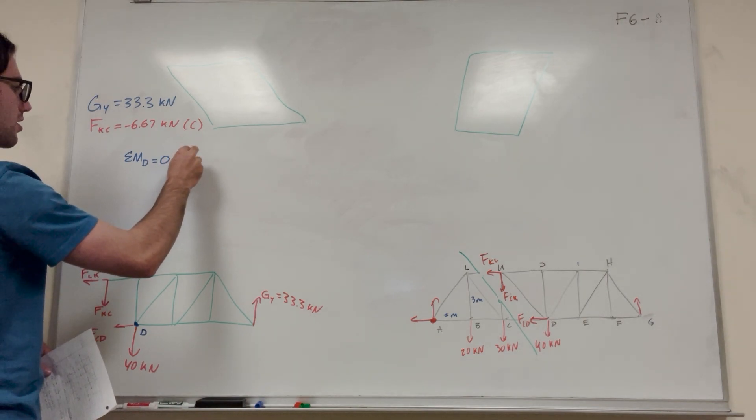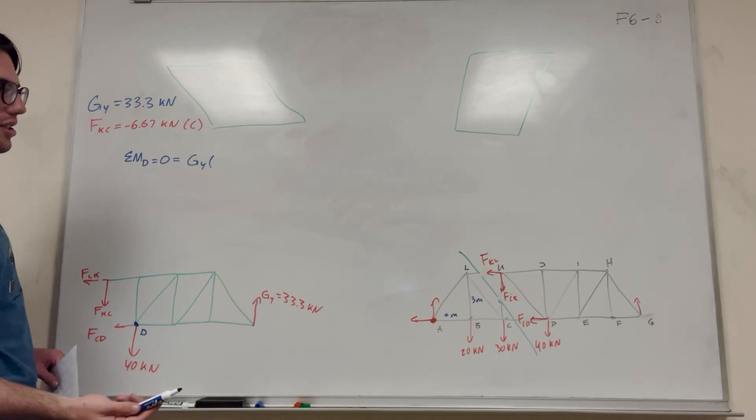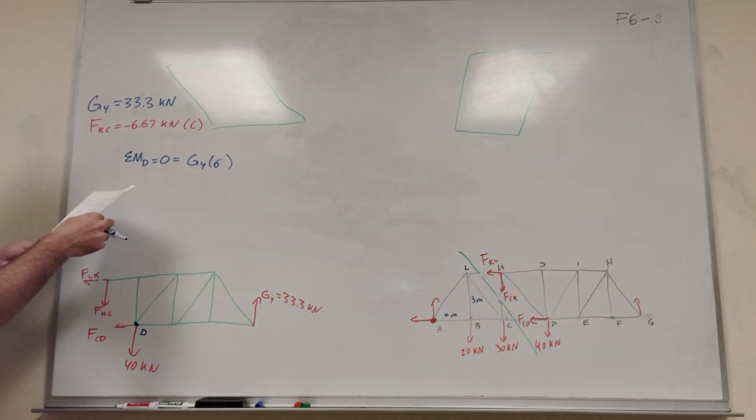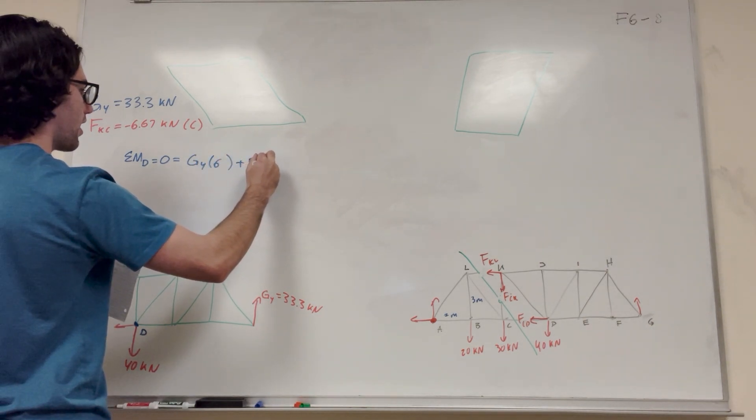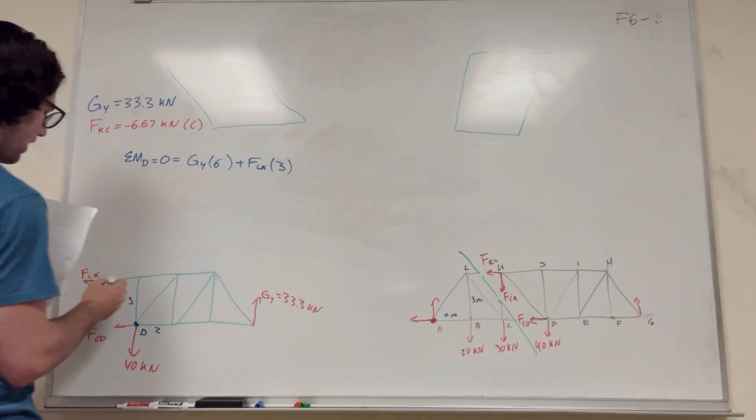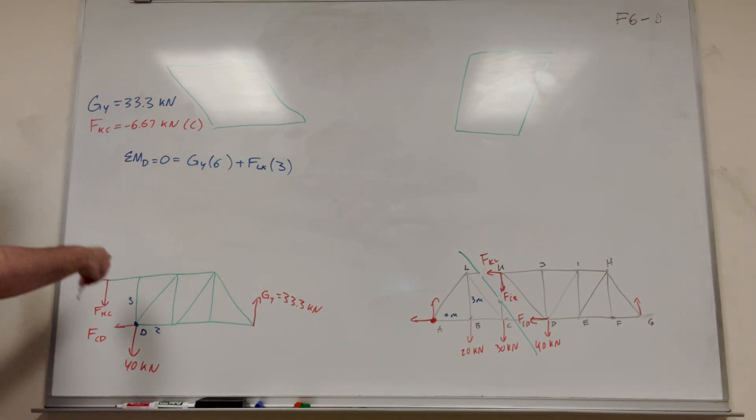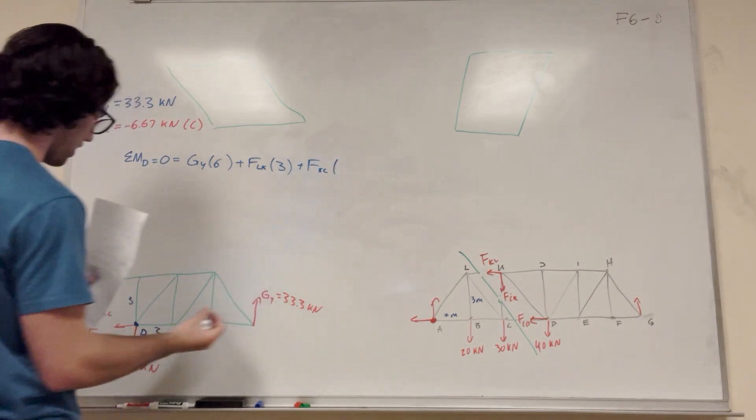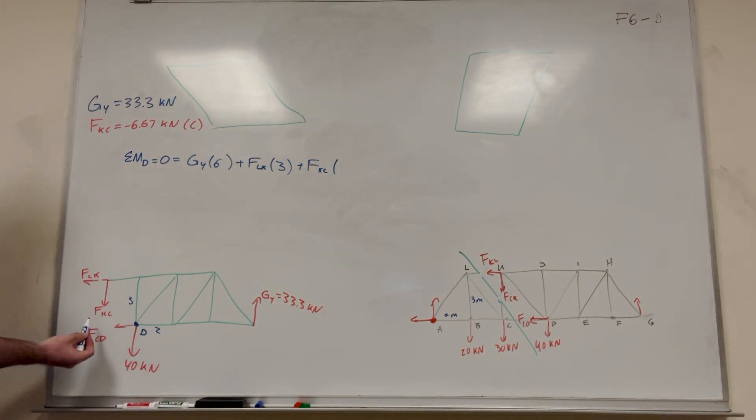So we have G of Y, and then that's pushing counterclockwise, so that's going to be a positive one. And then its distance is two, four, six, so six meters. So then we have FLK. So FLK is pushing also counterclockwise, so it's going to be FLK. And then because it's pushing in the X direction, we're looking for its vertical distance, so it goes up 3 meters, right? This is 3, and then this is 2. So that's going to be 3. And then FKC pushes downward. That's also counterclockwise. So we're also going to add that, plus FKC. And then because it's pushing downward, we're going to look for its horizontal distance, which is 2. Cool.